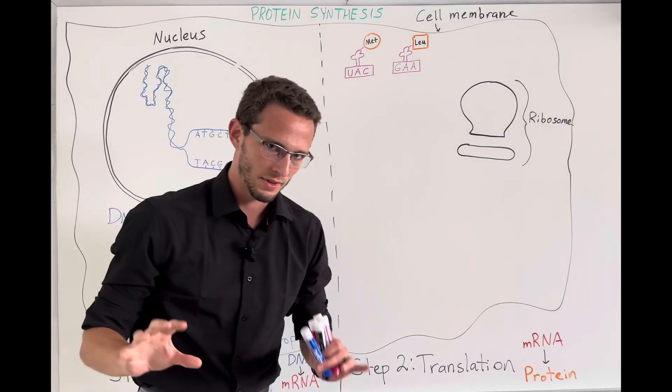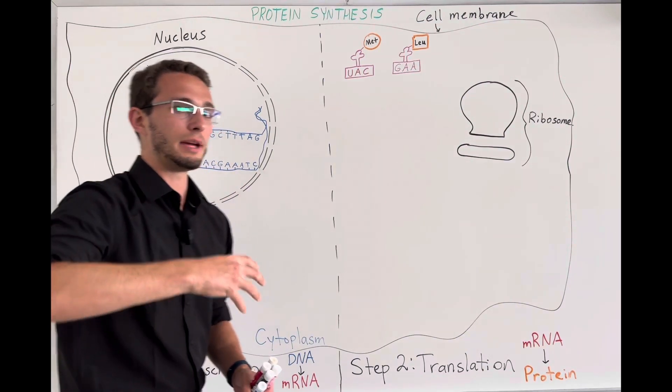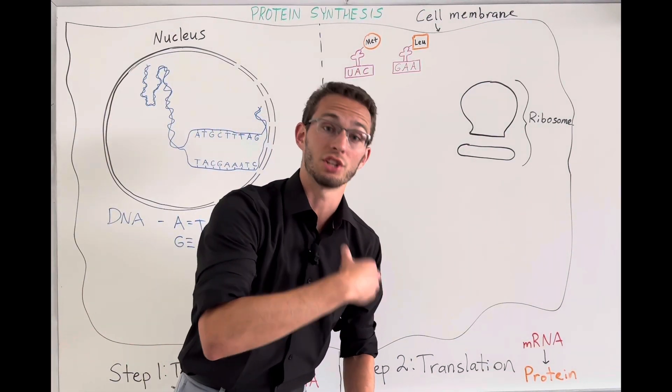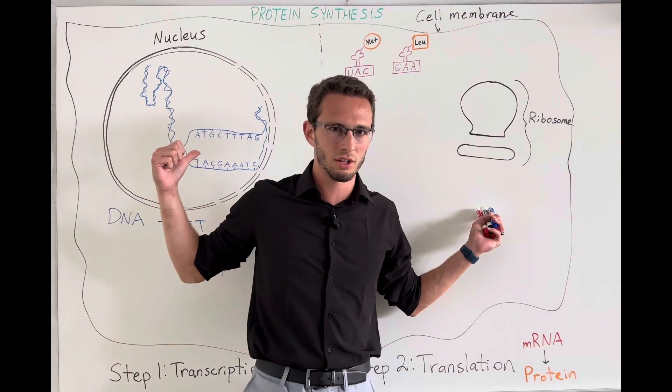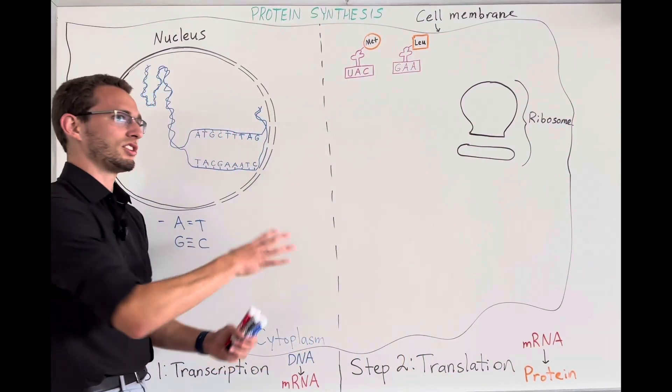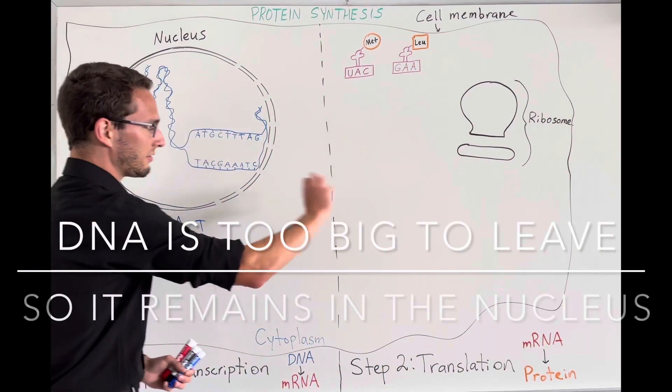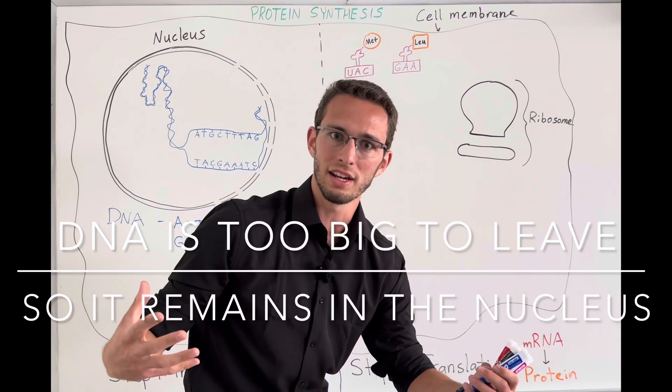So this is the instruction manual in the nucleus. Now, there's a problem. If the instruction manual is here, we need to tell the protein builders, the construction workers of our cells, the ribosomes, about these instructions. But the DNA never leaves the nucleus. In fact, it's too big, it's just too big of a molecule to leave and tell these ribosomes what they need to make.